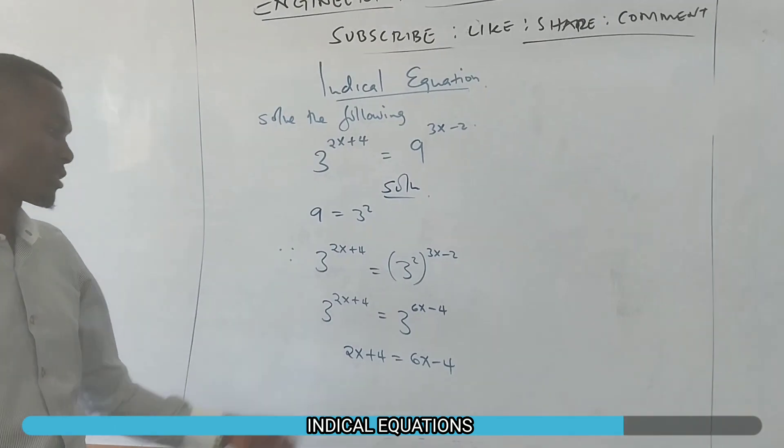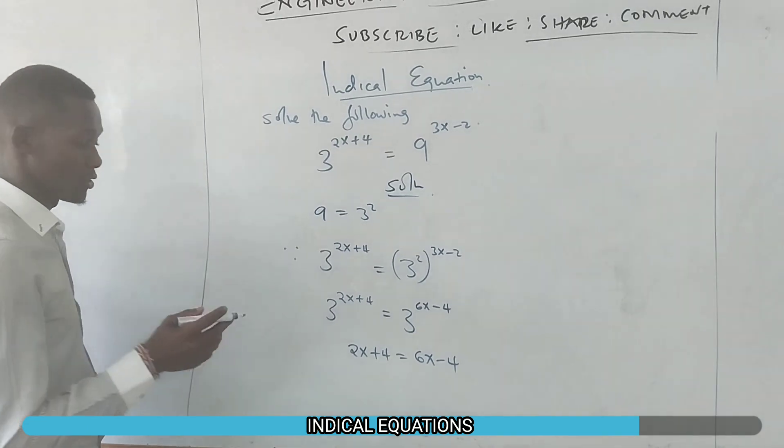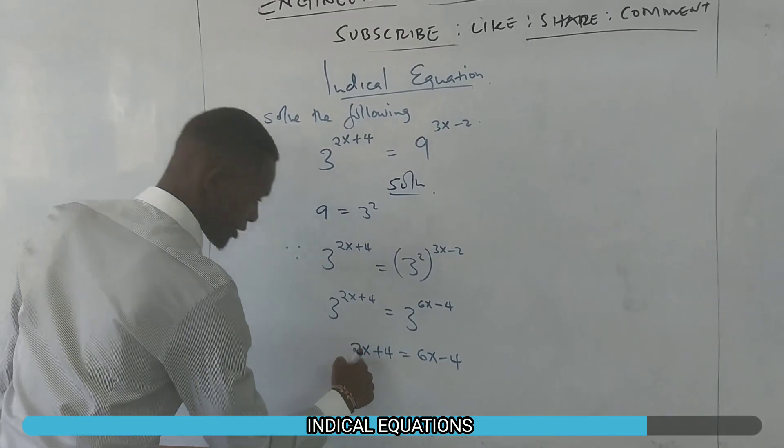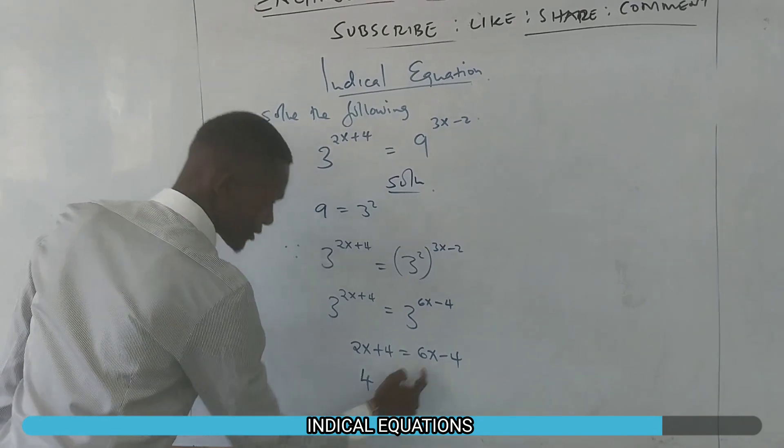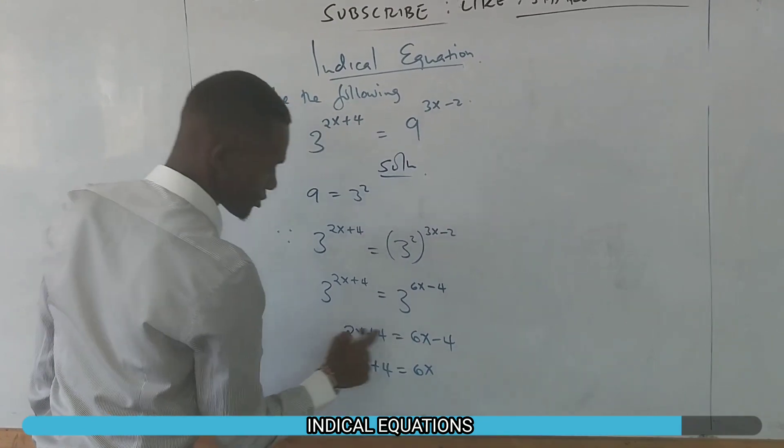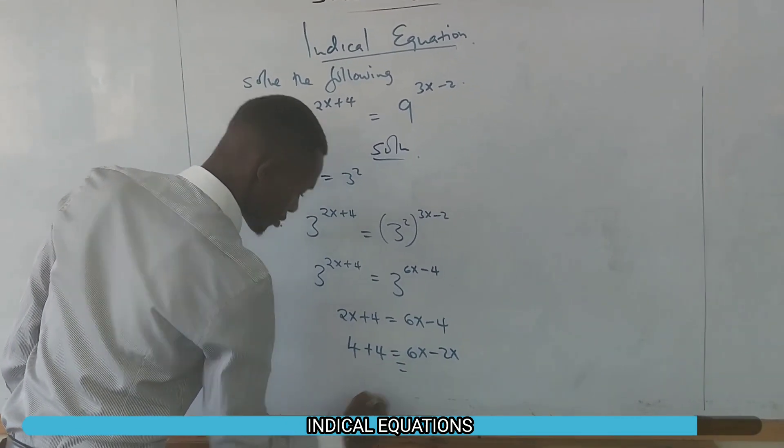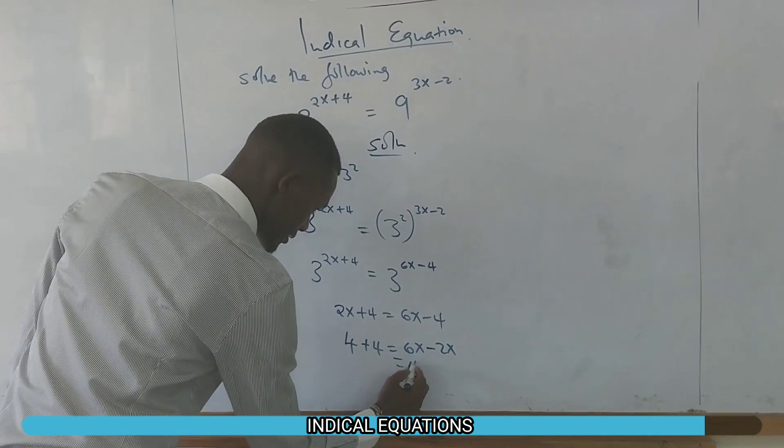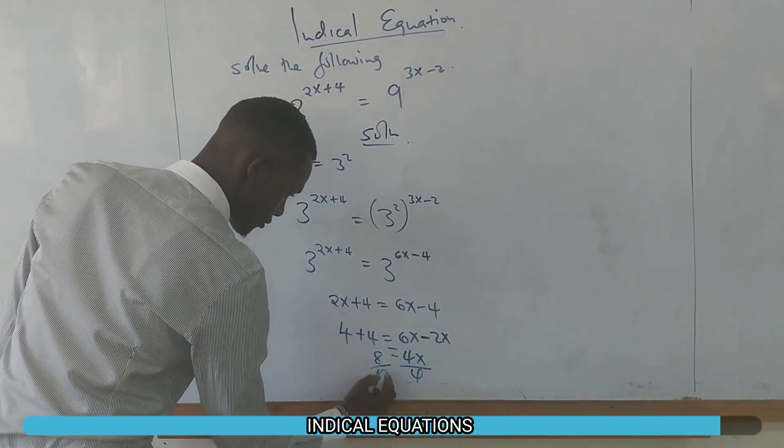So this one is a linear equation. You can just solve it. So you take like terms on one side and solve for the value of x. So you can take 2x on this side, then you take 4 on this side. So you have 4. This one is a minus. So if it comes to this side, it becomes plus 4. Then you have 6x. Then this one is a plus. So you have 4 plus 4 equals 6x minus 2x. So you have 4x equals to 8. Then you divide by 4.